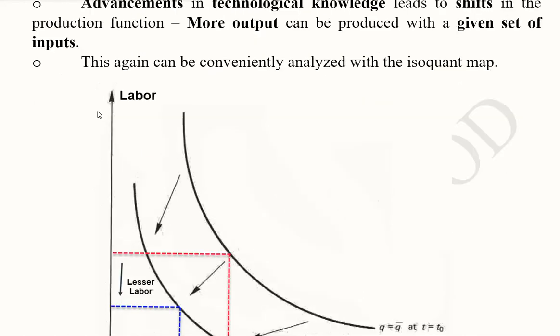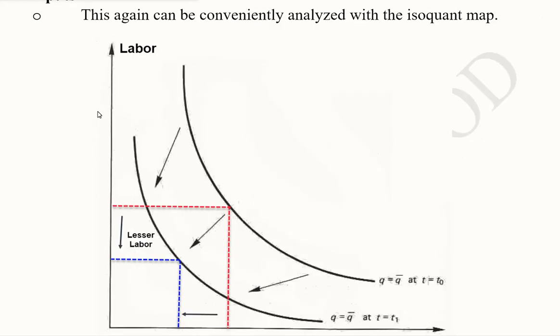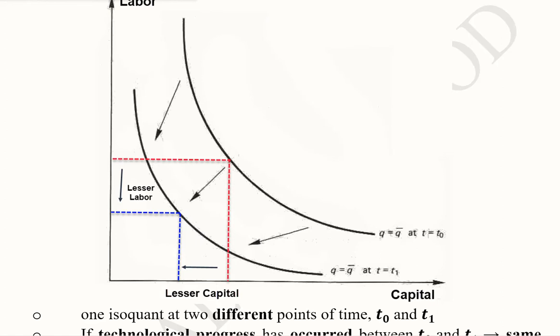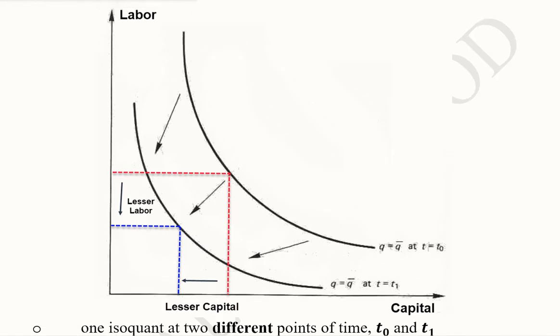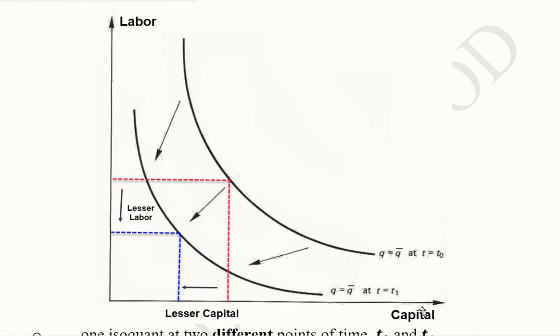Now we will see how it can affect the isoquant map. We have this isoquant map which is again very much helpful to understand the process of the changes in the production. Now capital and labor, they are placed on x and y-axis respectively.